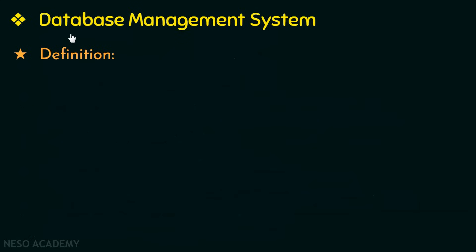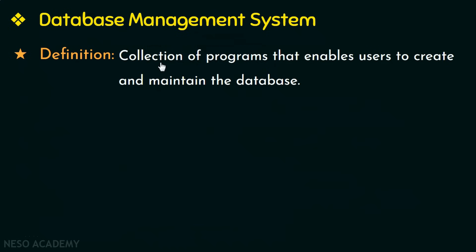Next let us see the definition of database management system. A database management system is a system to manage the database, where managing could be either storing of data or retrieval of data from the database. More precisely, a database management system is a software — a collection of programs — that enables users to create and maintain the database.